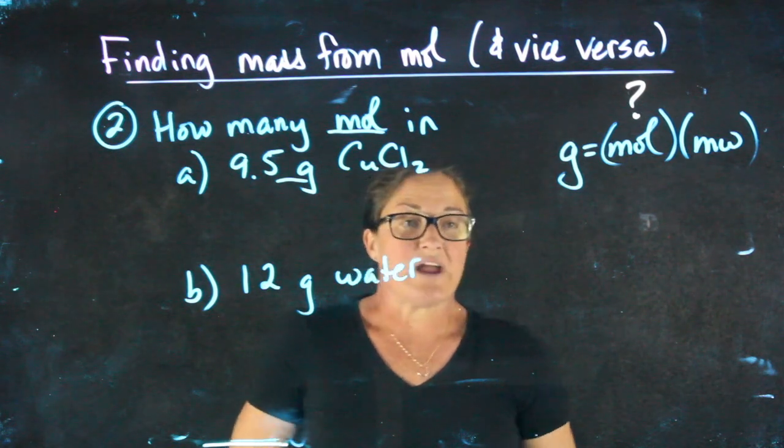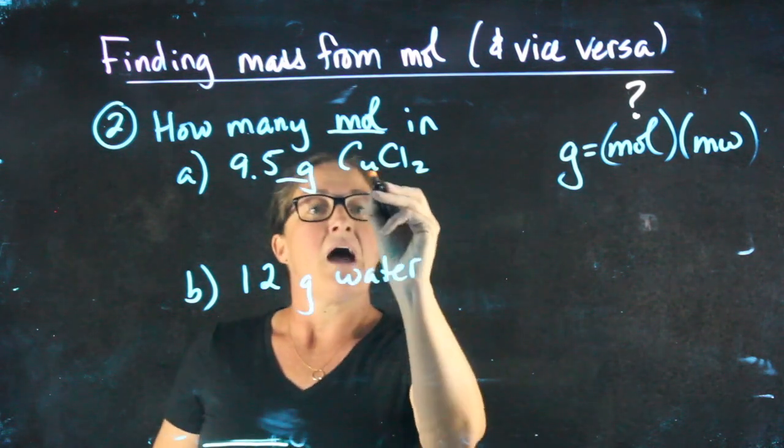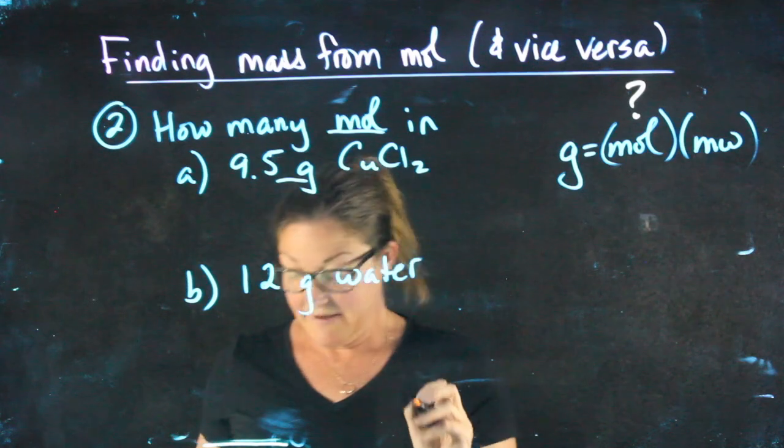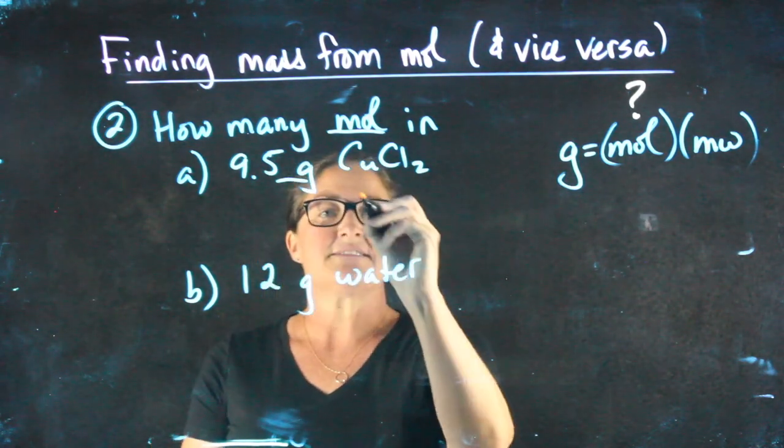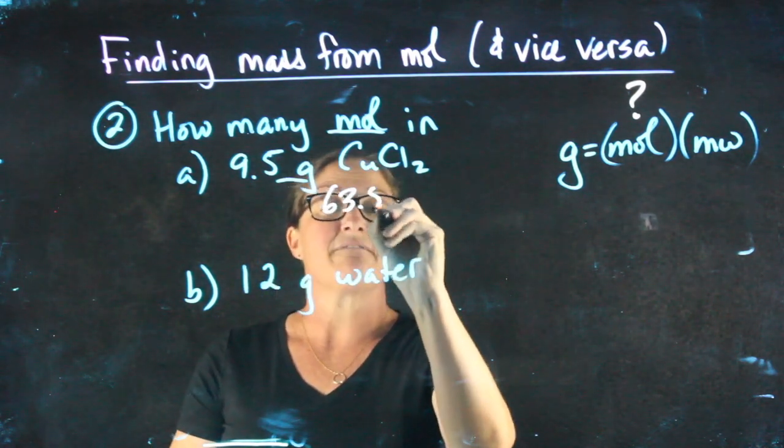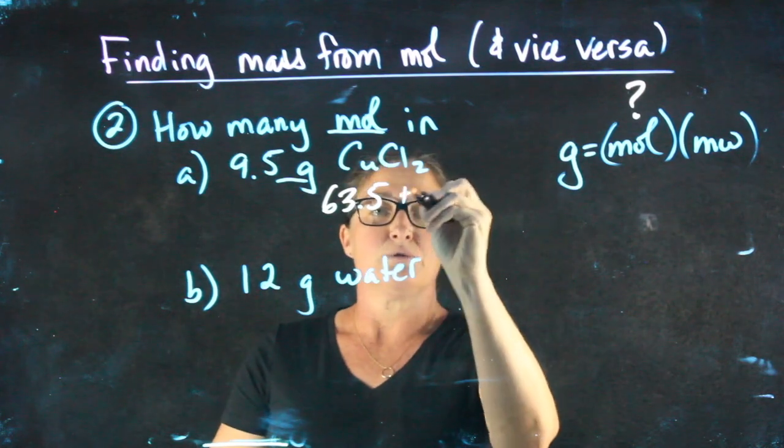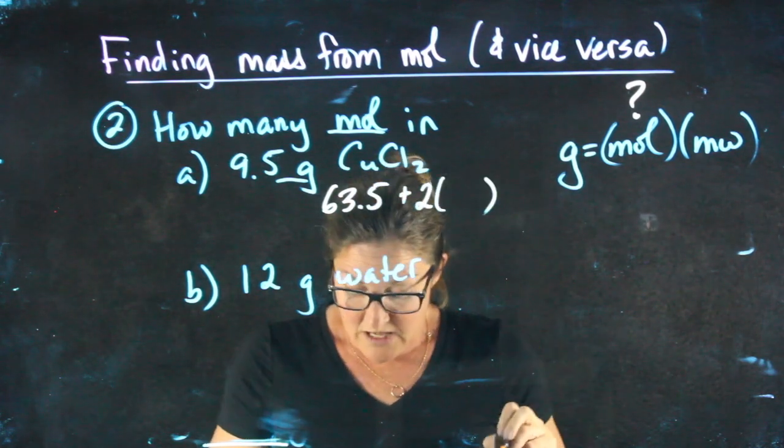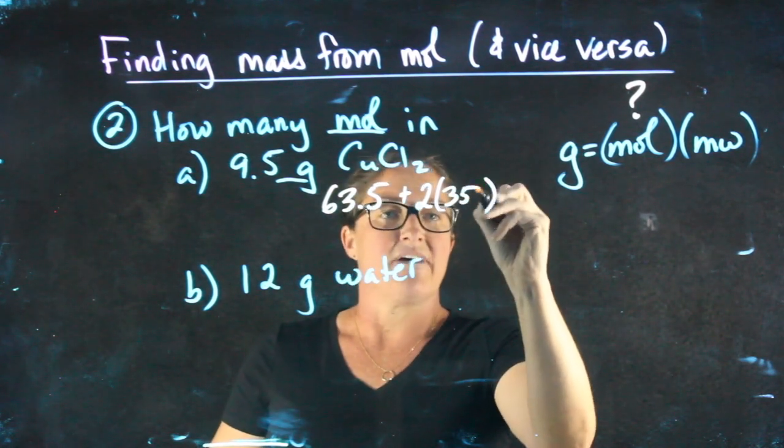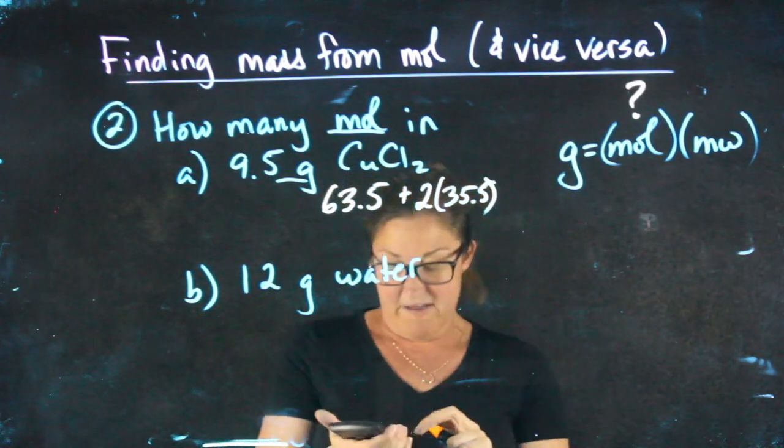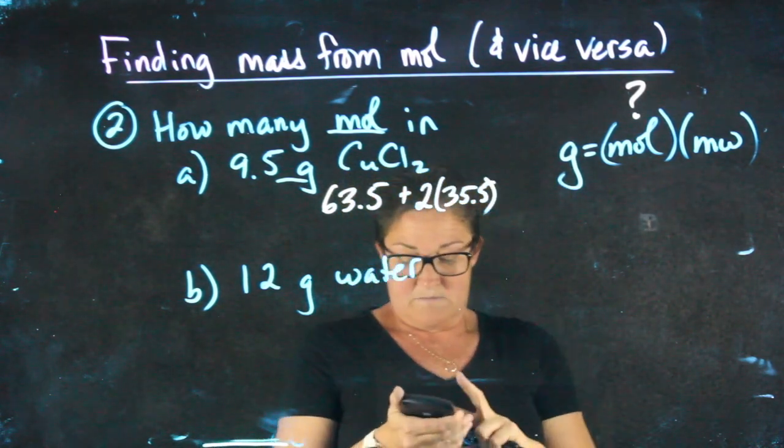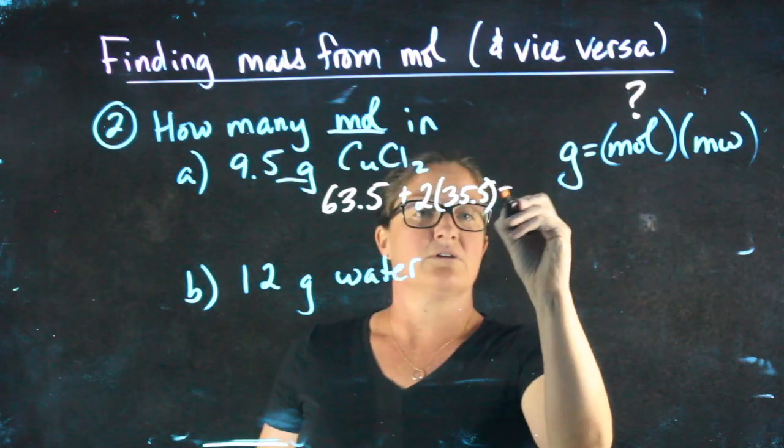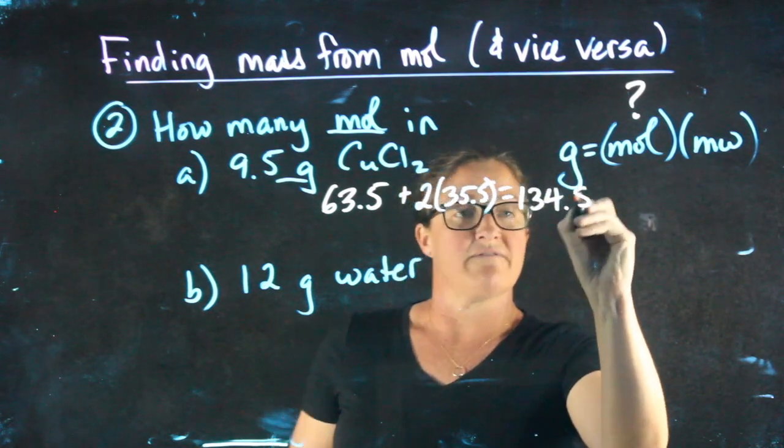Part A: 9.5 grams of copper chloride. I need to find the molecular weight of copper chloride. Copper is 63.5, two chlorines, each chlorine is 35.5. Remember these are the two that we use the 0.5, giving us a total of 134.5.